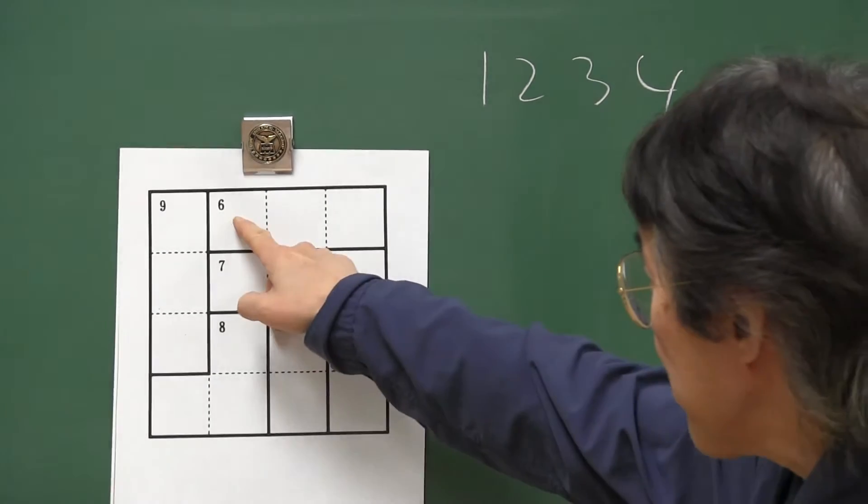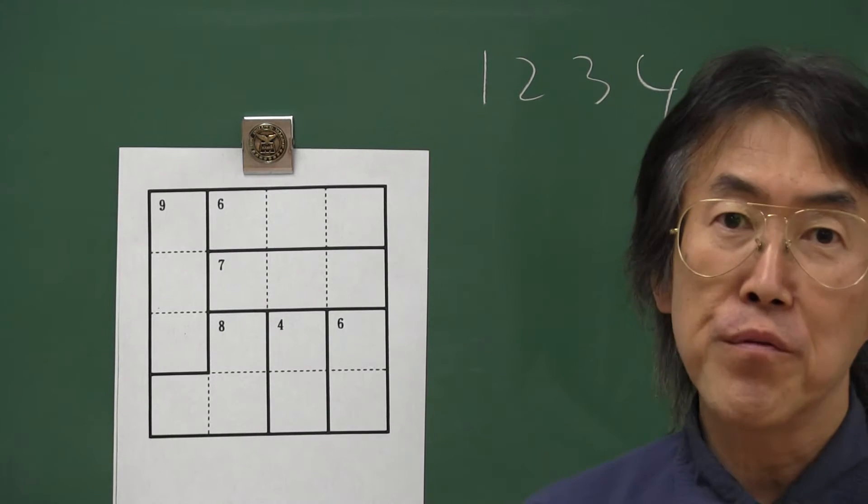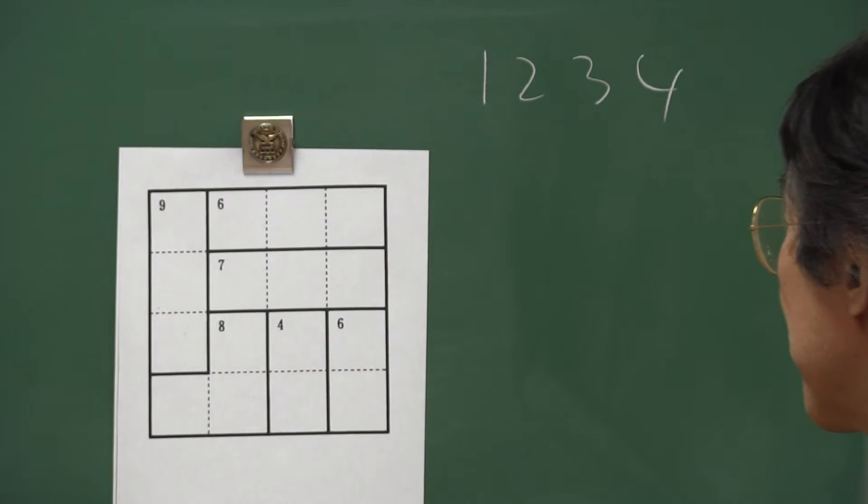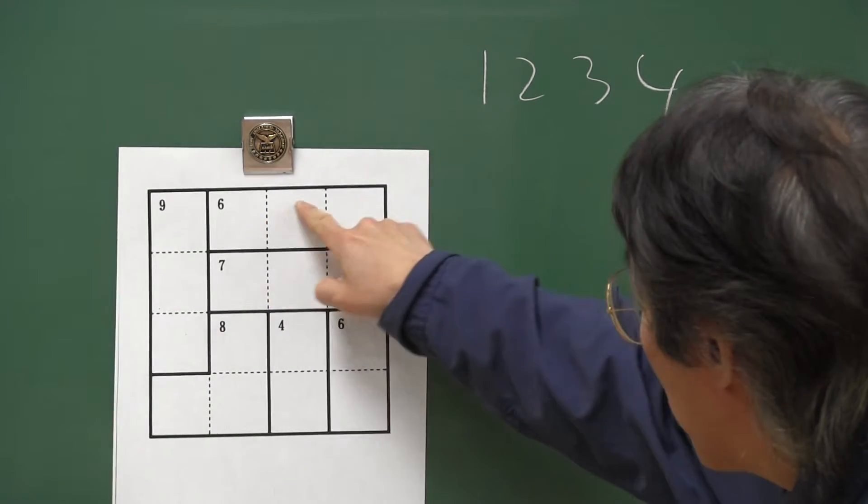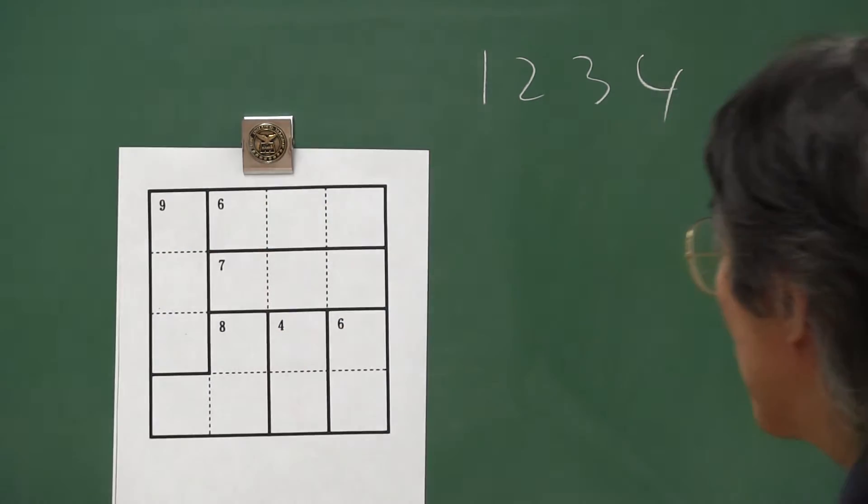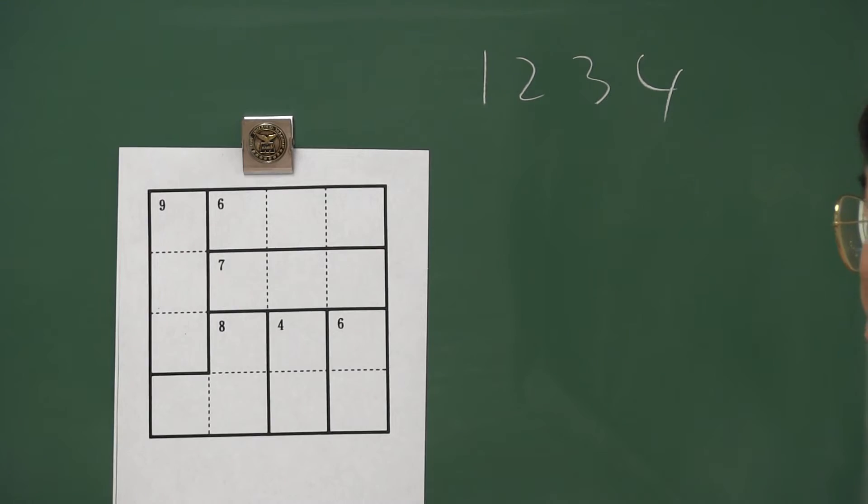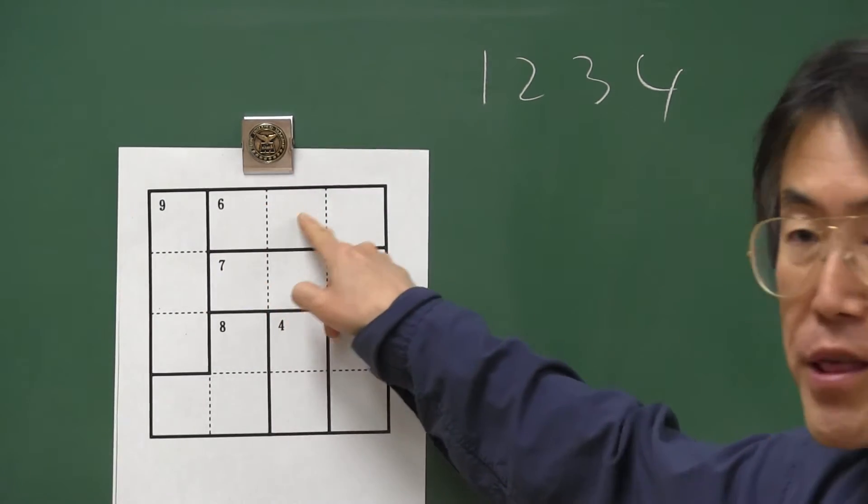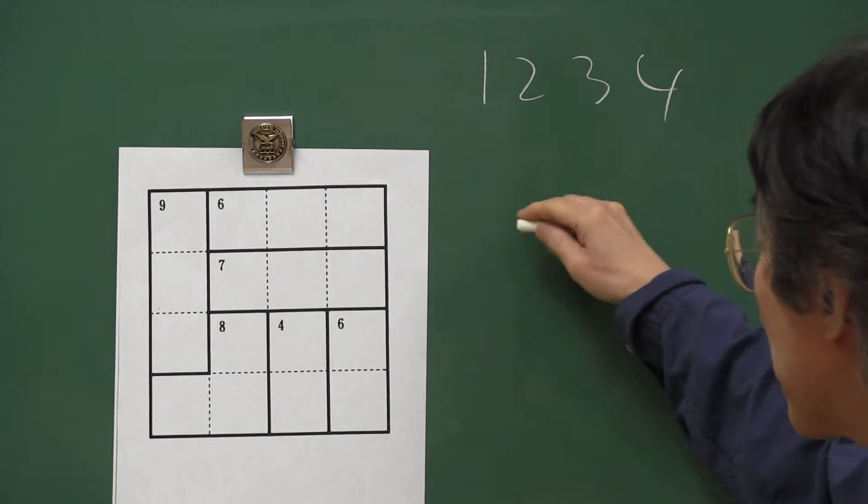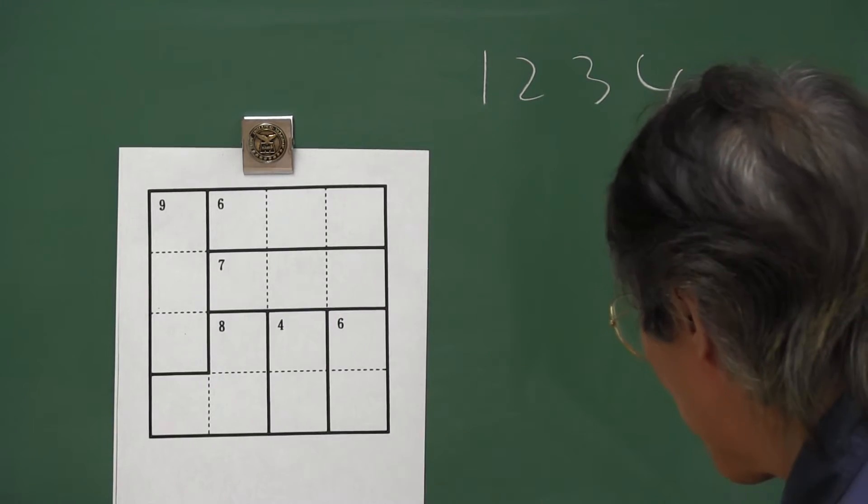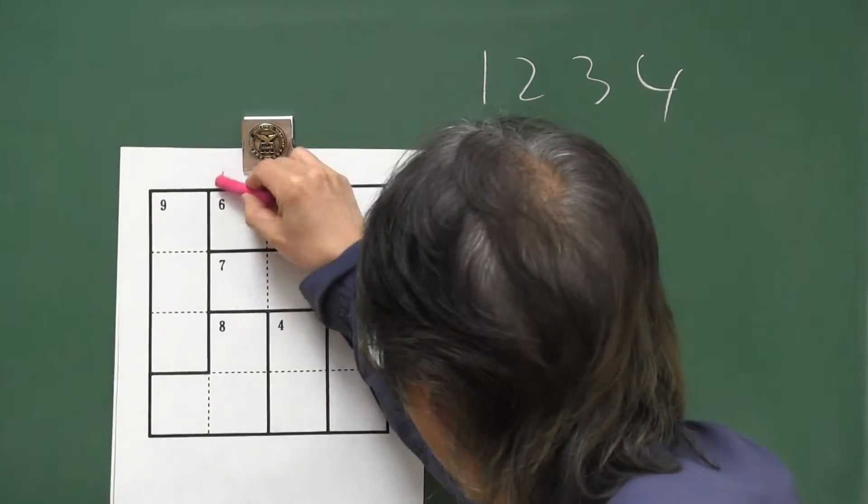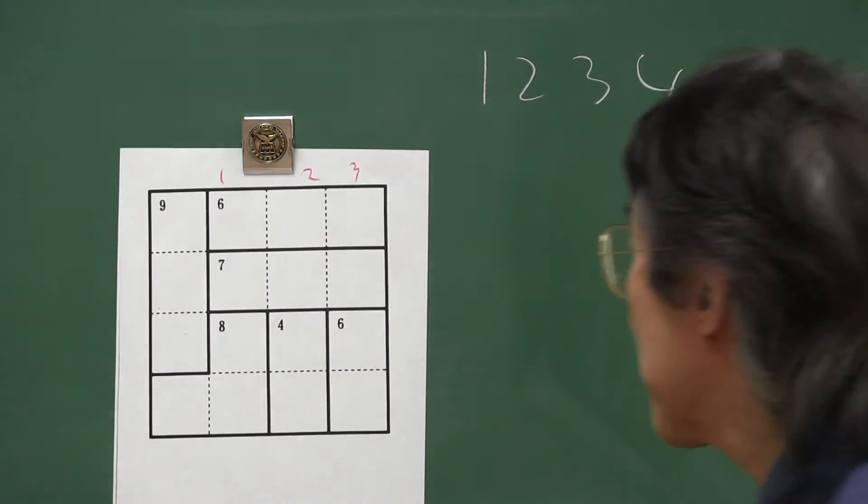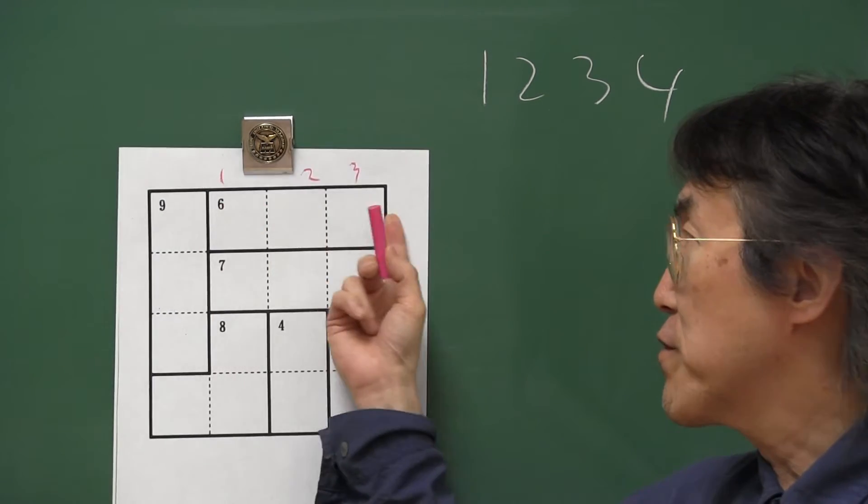And small numbers mean the result of addition. For example, three numbers make six. You can use one, two, three, four. Then what are three numbers that make six? Only one combination: one, two, three. They are not decided.